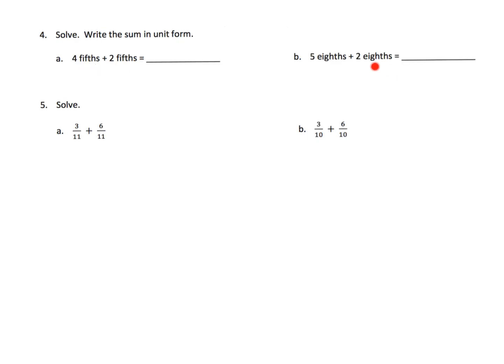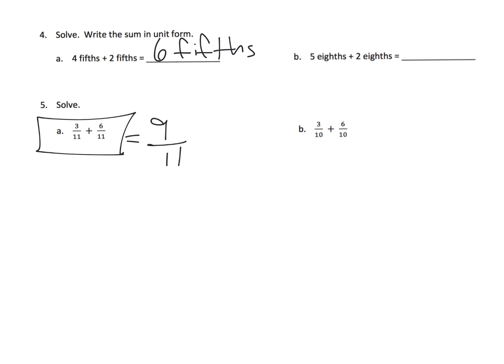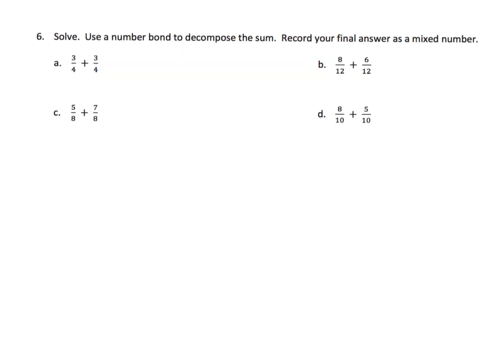Here we're returning to the units model, but now we're adding rather than subtracting. Four-fifths plus two-fifths equals six-fifths and we can leave it there — we don't have to change it into a mixed number at this point. Then three-elevenths plus six-elevenths equals nine-elevenths, because we're looking at those elevenths as labels, like fifths or eighths.